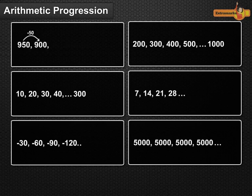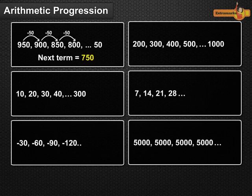In first, each term is 50 less than the term preceding it. Therefore, next term in continuation is 750. In second, each term is 100 more than the term preceding it. Therefore, next term in continuation is 600.